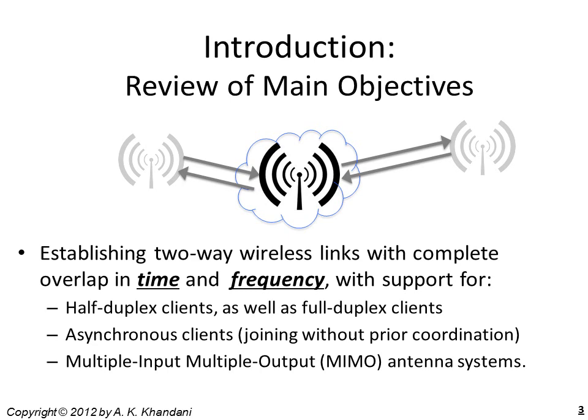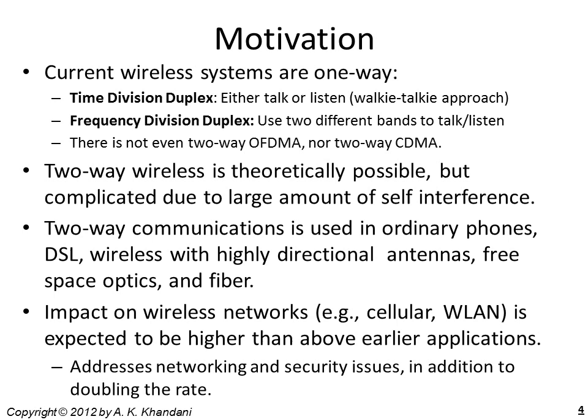Current wireless systems are one-way in the sense that they use either two different time slots or two different frequency bands to send and receive. Even in the context of OFDM or CDMA, there is no practical method known to use two different tones or two different spreading codes to establish a full duplex link.